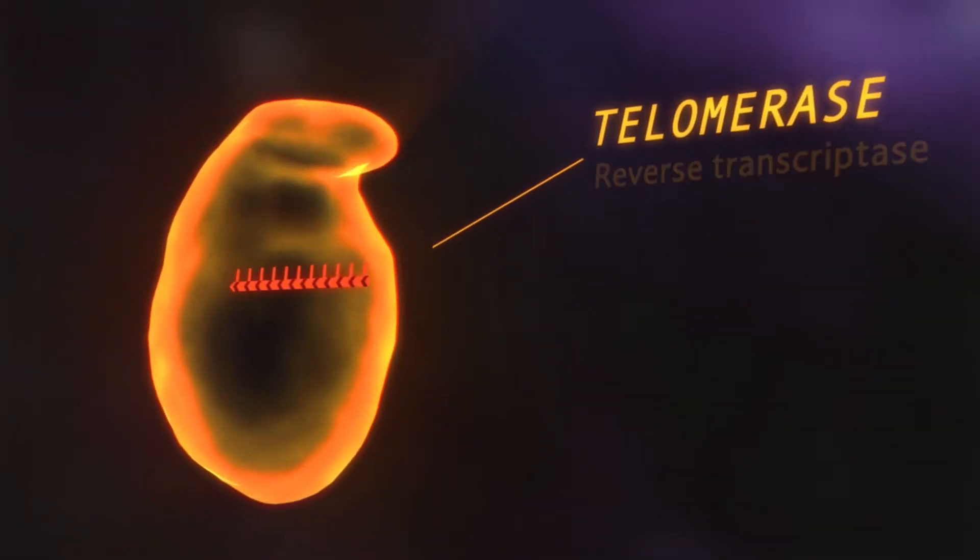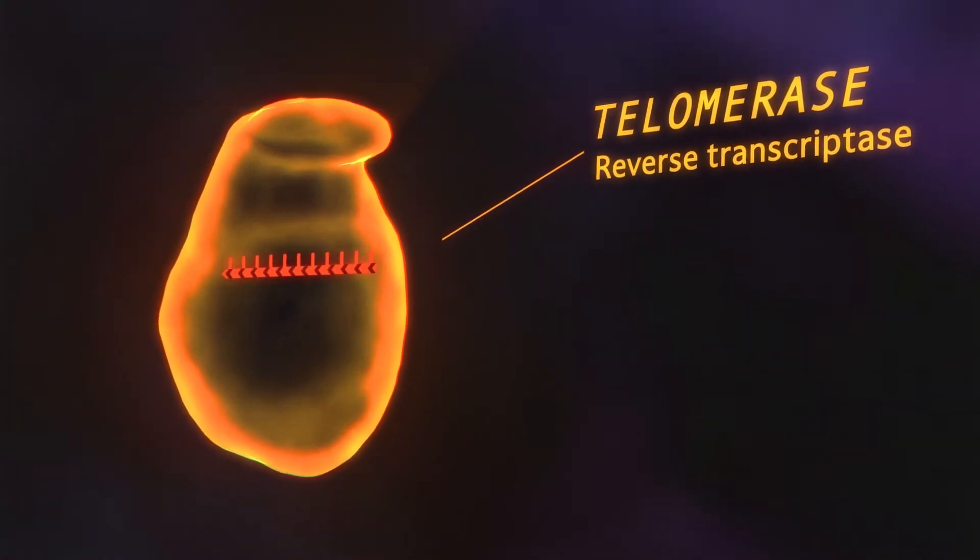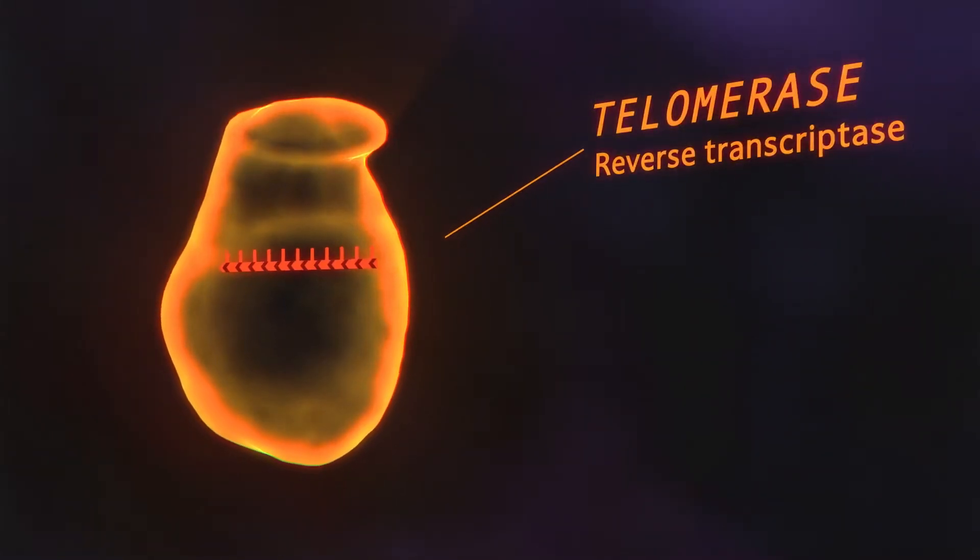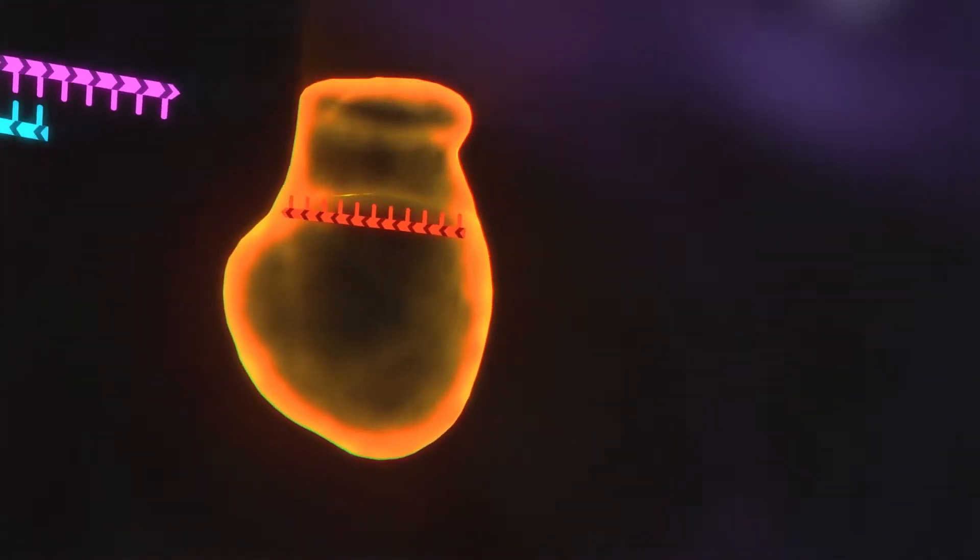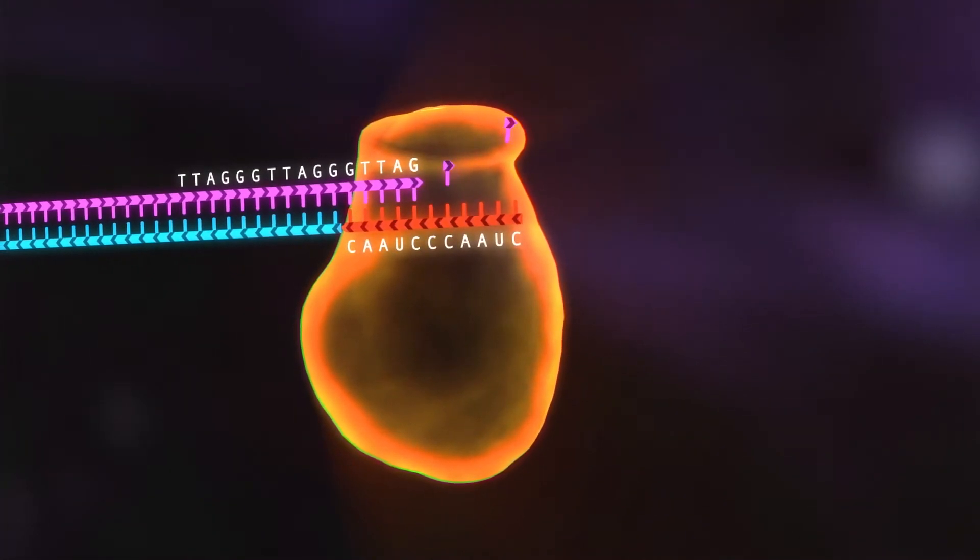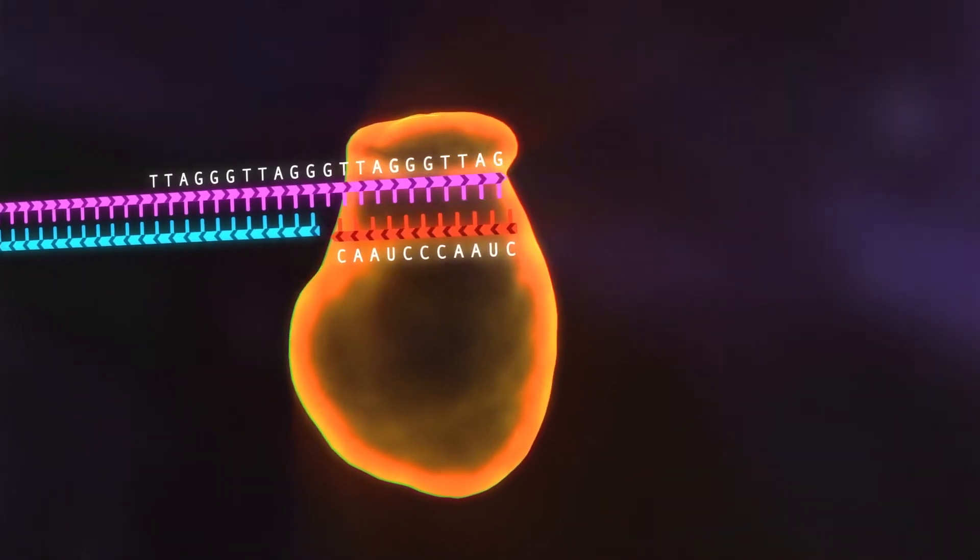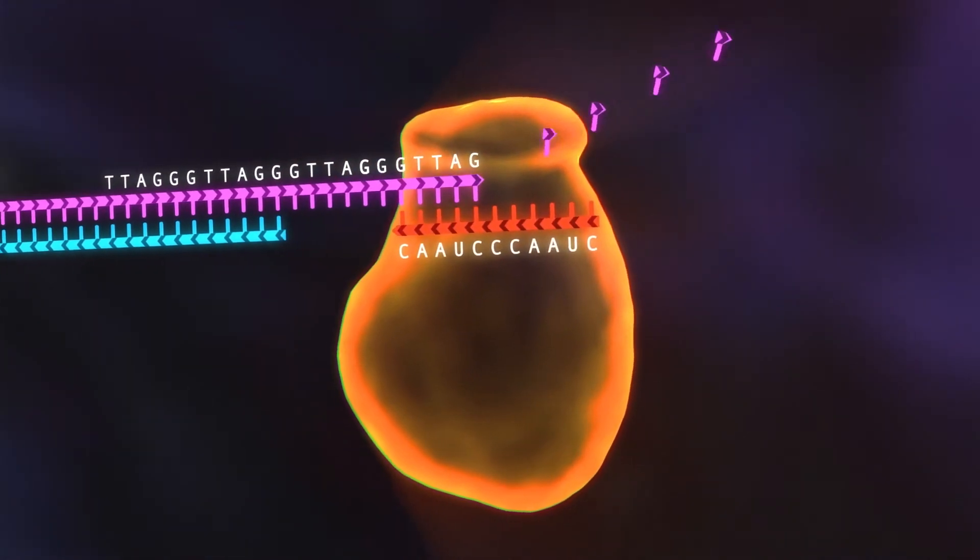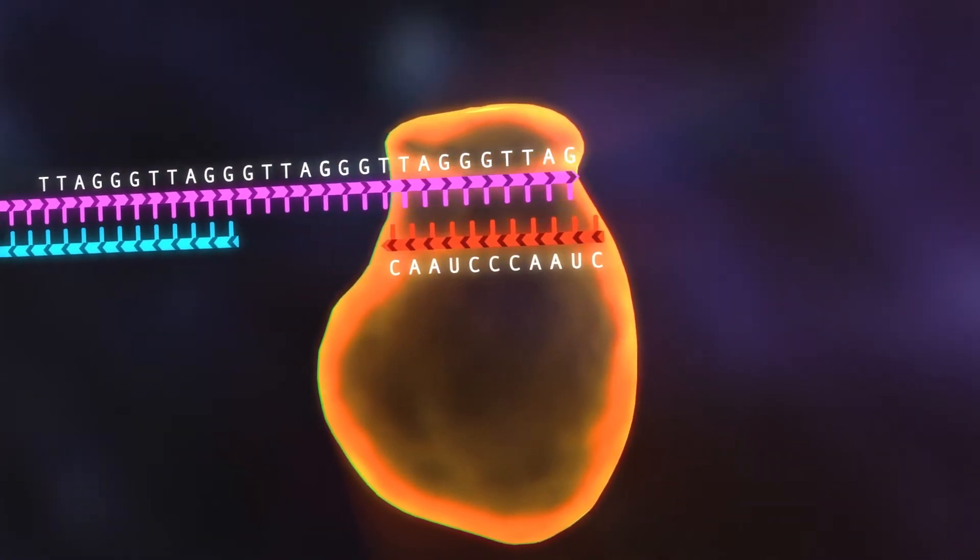Telomerase is a reverse transcriptase, meaning it uses RNA to synthesize DNA rather than the other way around. Telomerase binds to the telomere overhang and elongates the DNA, then moves down it, repeating this process and extending the overhang even more.